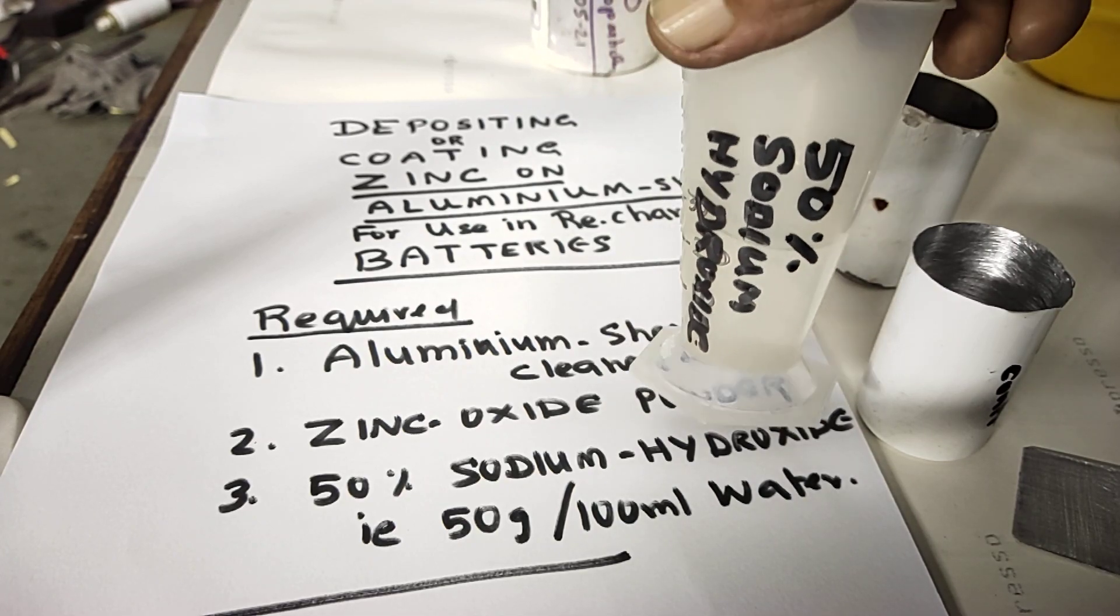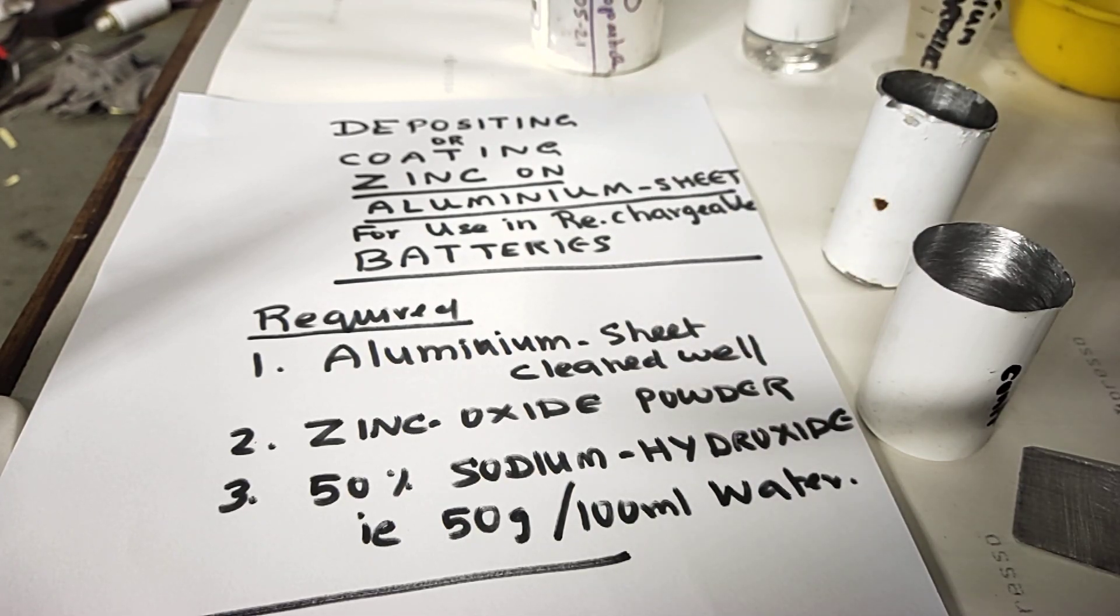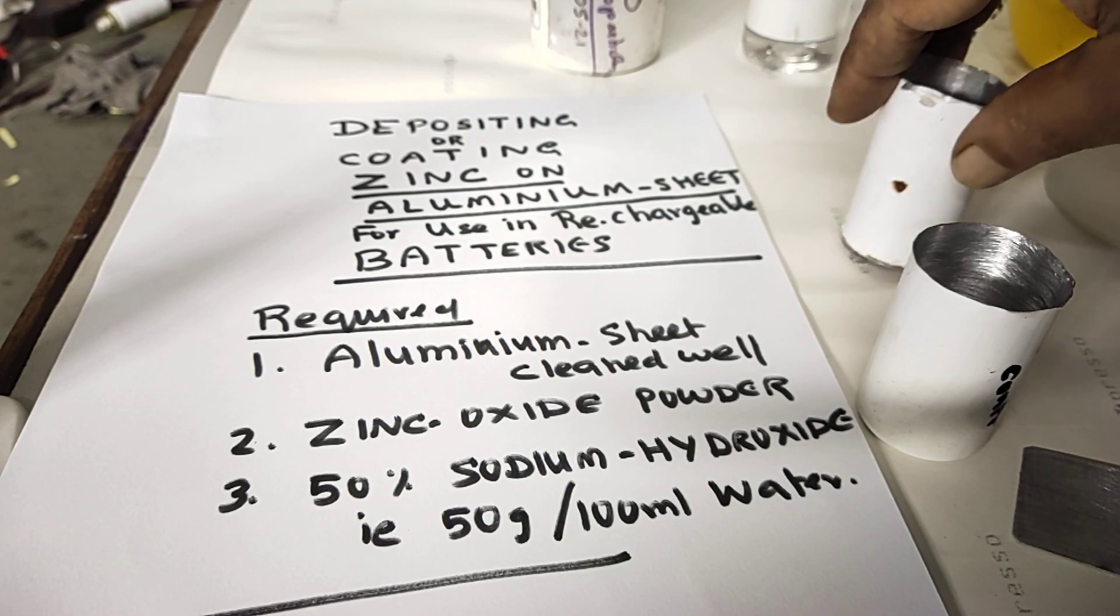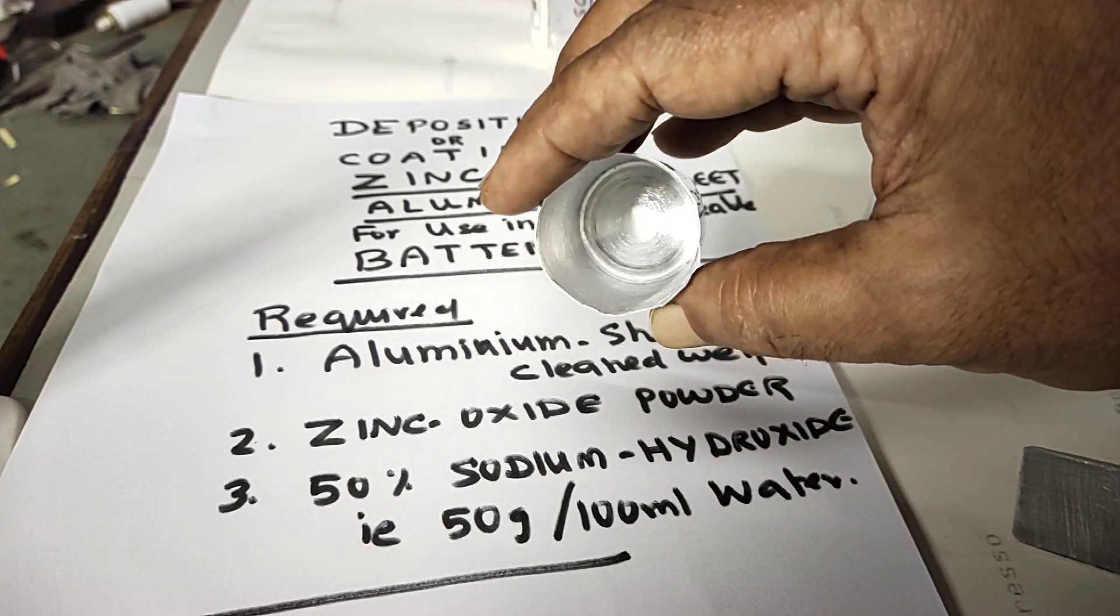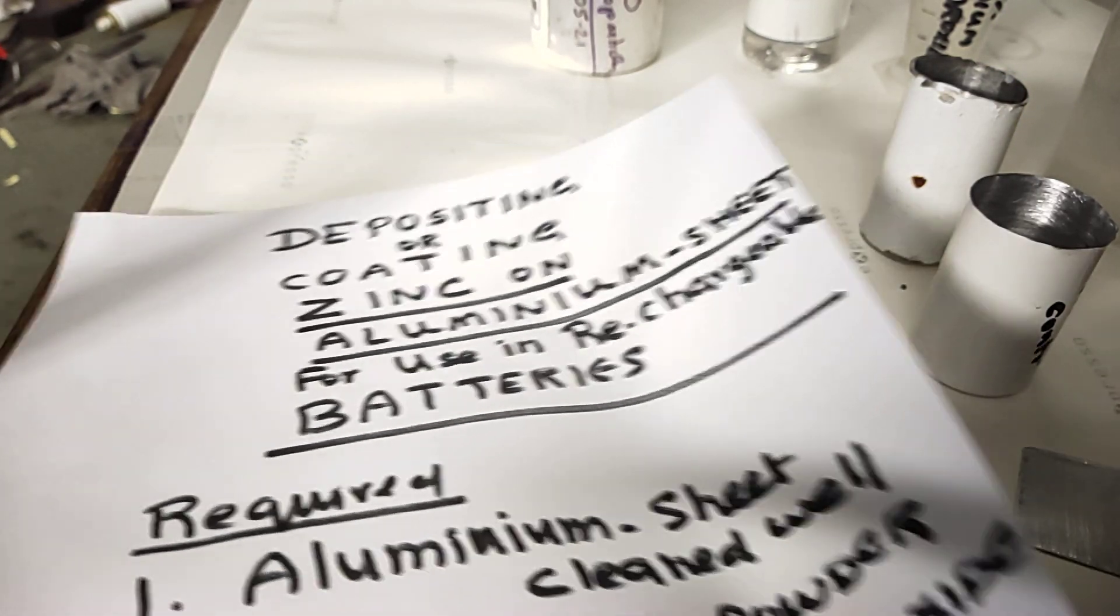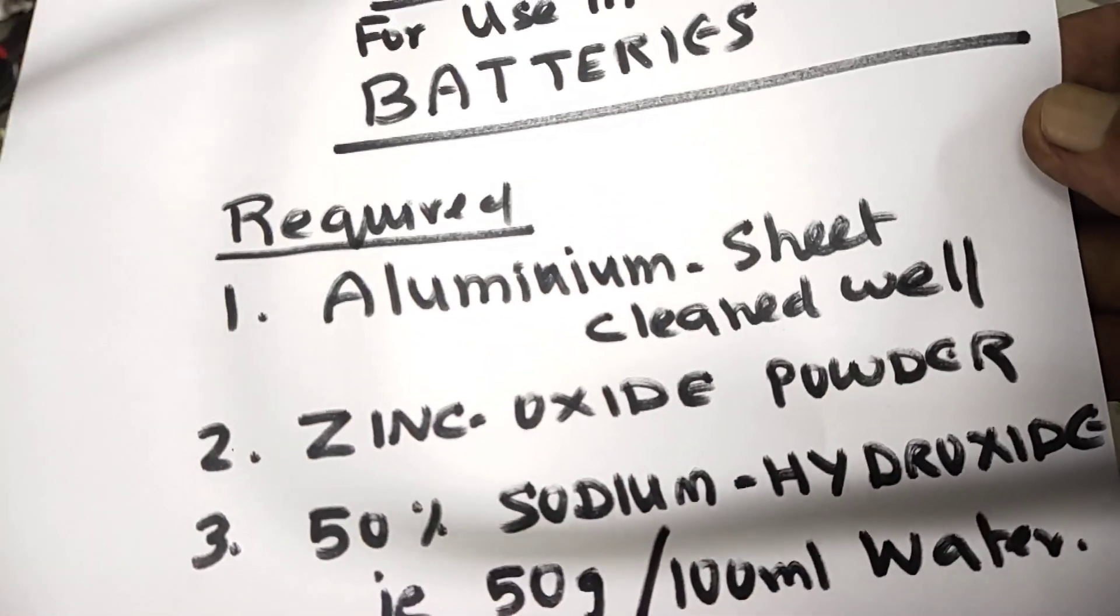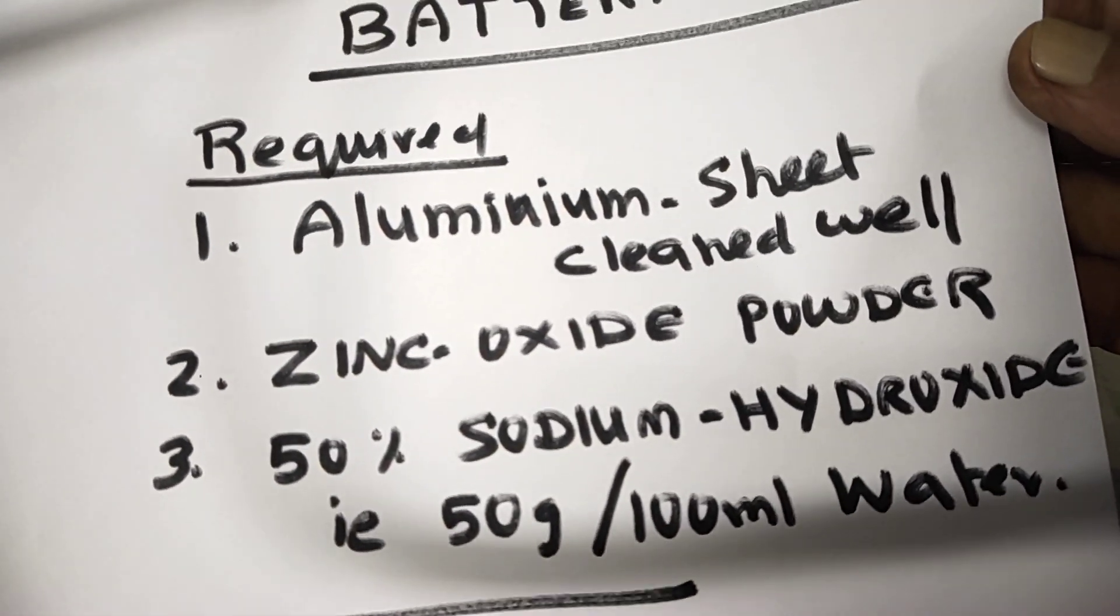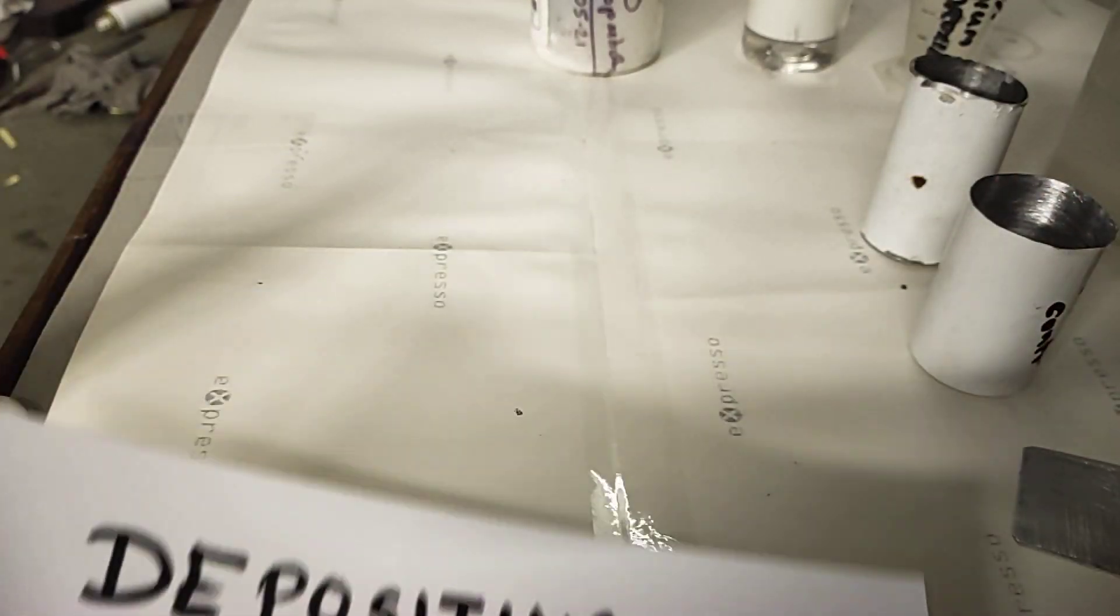So, 50 grams in 100 ml of distilled water, that's all. We also need extra distilled water during the process. Let's start. This is an aluminum container. You can make note of it - we require aluminum sheet, zinc oxide powder, and sodium hydroxide. This is all that's required.